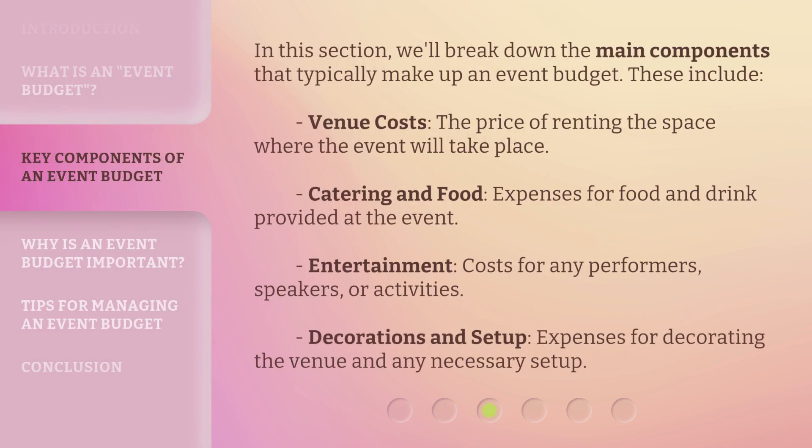In this section, we'll break down the main components that typically make up an event budget. These include: venue costs — the price of renting the space where the event will take place; catering and food — expenses for food and drink provided at the event; entertainment — costs for any performers, speakers, or activities; and decorations and setup — expenses for decorating the venue and any necessary setup.